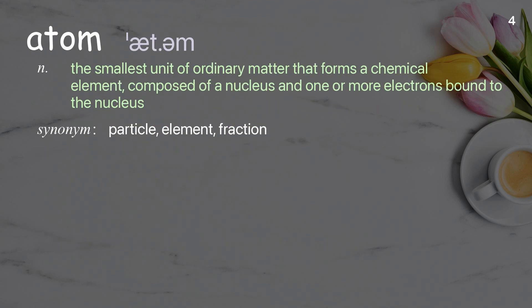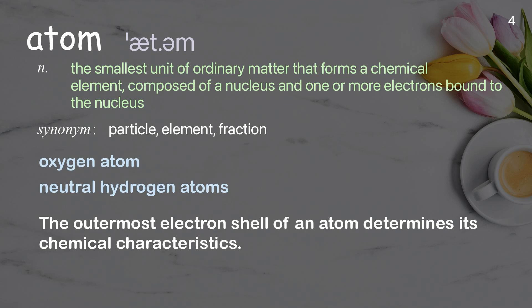Atom. The smallest unit of ordinary matter that forms a chemical element, composed of a nucleus and one or more electrons bound to the nucleus. Examples: oxygen atom, neutral hydrogen atoms. The outermost electron shell of an atom determines its chemical characteristics.